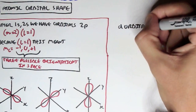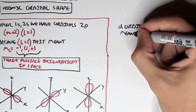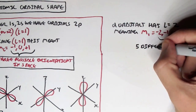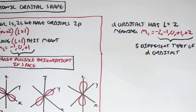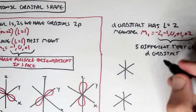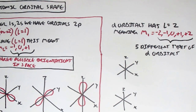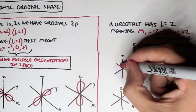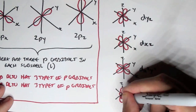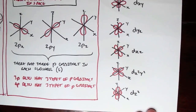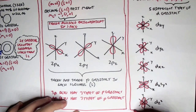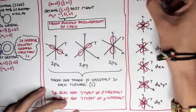D orbitals have the azimuthal quantum number of 2, meaning the magnetic quantum number is negative 2, negative 1, 0, positive 1, and positive 2 — meaning there are five different types of D orbitals with five different orientations in space. These are the five D orbitals: DXY, DYZ, DXZ, DX²-Y², and DZ². Two electrons can fit in each, giving us a total of 10 electrons fitting in the D orbitals.